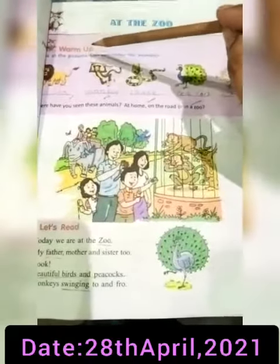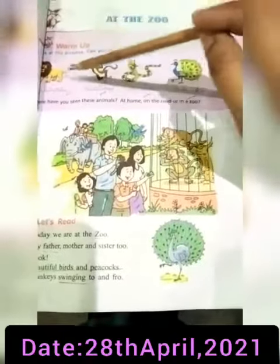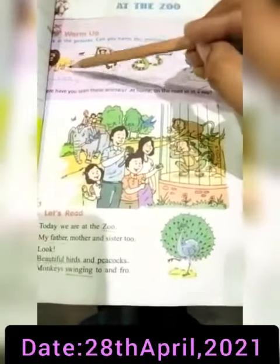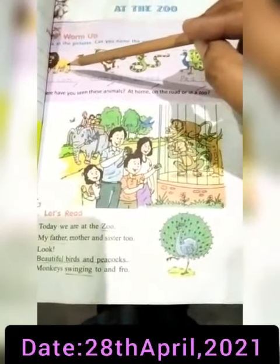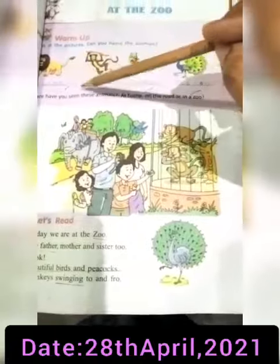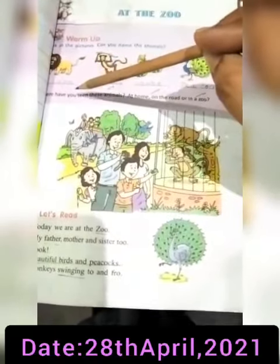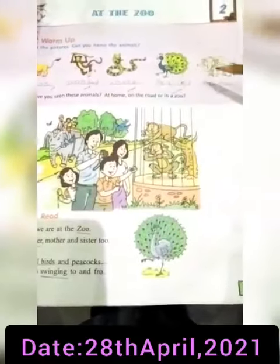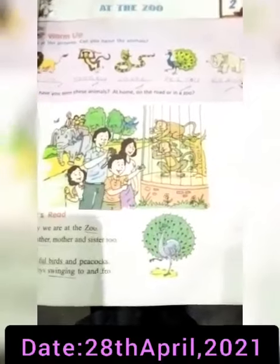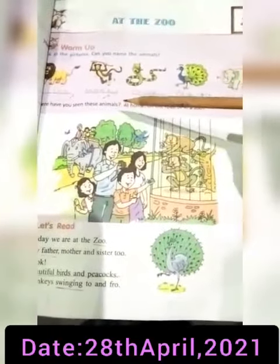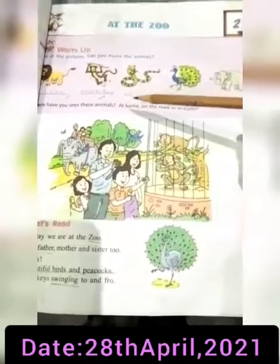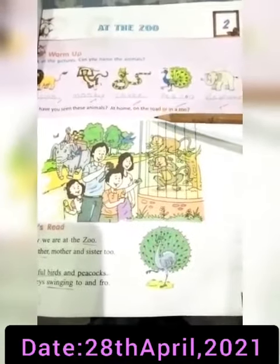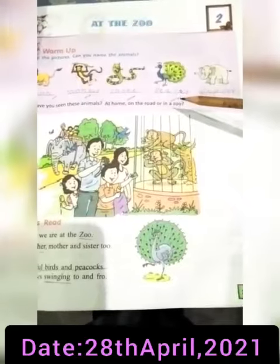Let's start the warm up. Look at the picture. Can you name the animals? This is a monkey, lion, snake, peacock, and elephant. Where have you seen these animals — at home, on the road, or in the zoo?